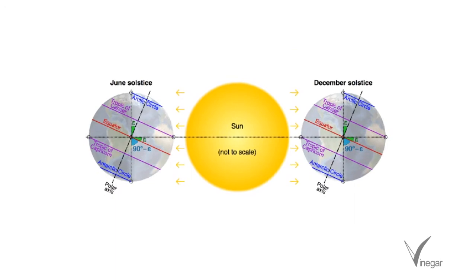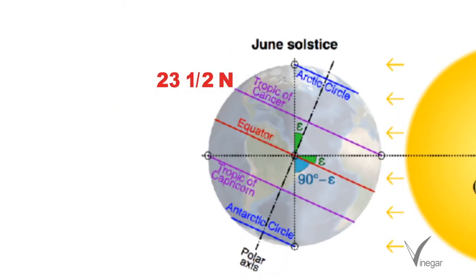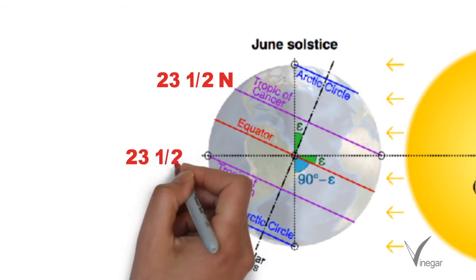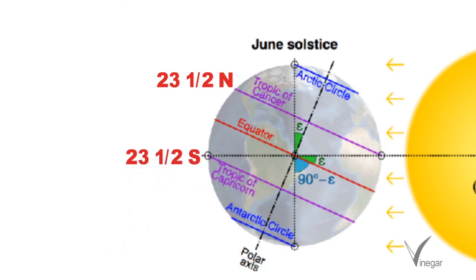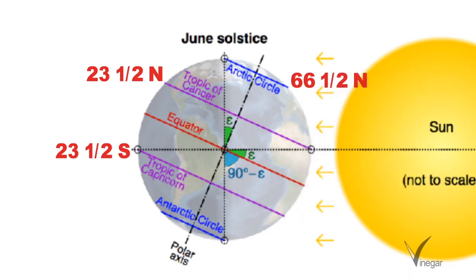Four latitudes are most important. First is the Tropic of Cancer which is at 23 and a half degrees north. Second is the Tropic of Capricorn which is at 23 and a half degrees south. Third is the Arctic Circle which is at 66 and a half degrees north. And last is the Antarctic Circle which is at 66 and a half degrees south.